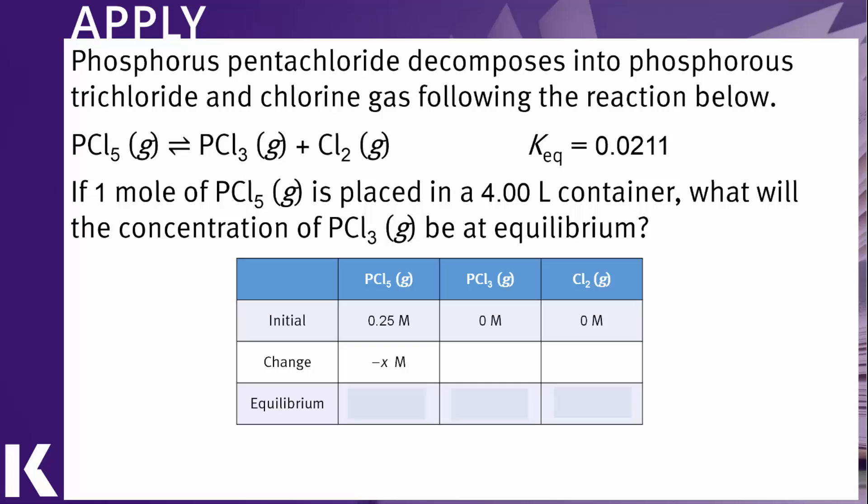Whatever PCl5 decomposes will represent as minus X. And the stoichiometry shows us that for every mole of PCl5, we get one mole of PCl3. So we'll call that plus X and one mole of chlorine gas. So we'll also call that plus X. Therefore, at equilibrium, the PCl5 is 0.25 minus X. The PCl3 is X and the chlorine gas is also X.